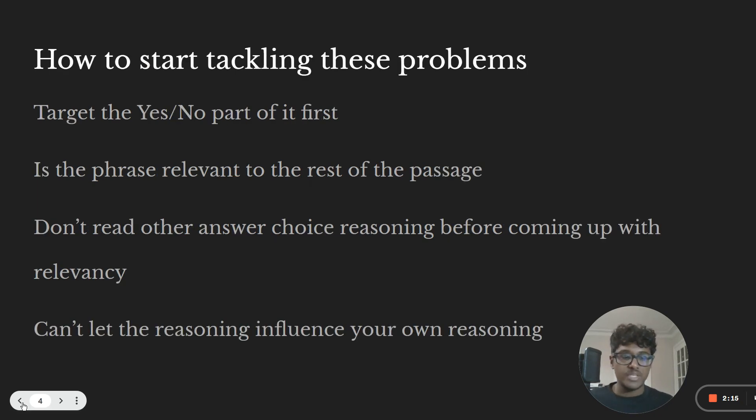Now, how do we start tackling these problems? What do I have to do to get them correct? The easiest way to do it is by starting with the yes and the no. And what I mean by that is normally in these questions, you'll have answer choices and there'll be two yeses and two nos. Is this thing relevant? Yes or no? And that basically narrows down two answer choices. You need to target that part first. And the reason is, you need to figure out that part because you don't want to get distracted by the reasoning that the answer choices give you.